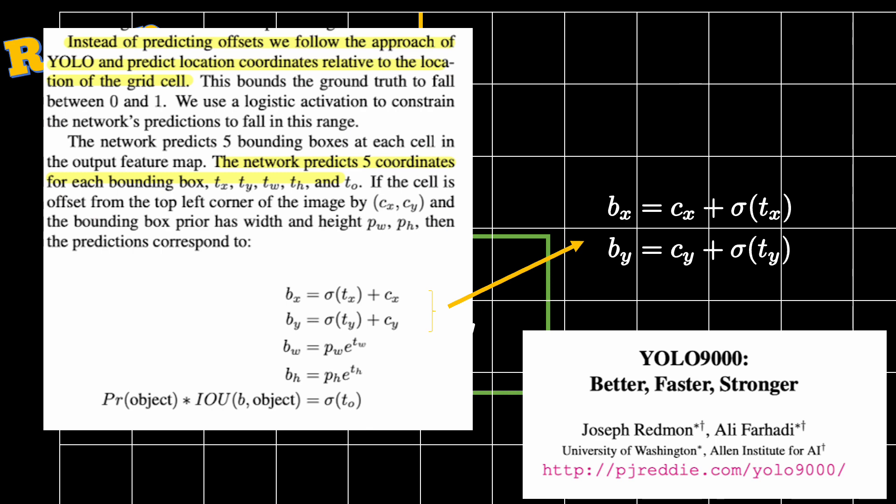And this is why to constrain the values that we get between 0 and 1, we would pass the value of TX and TY to a sigmoid function. Sigmoid function takes a real value and squishes it between 0 and 1 depending on its magnitude and the sign. And this is what was shown in the YOLO V2 paper.